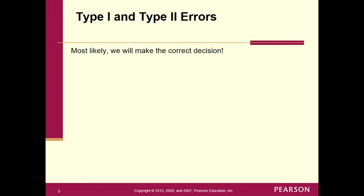Most likely when we do a hypothesis test, we did make the right decision. If we should have rejected the null, we usually end up rejecting it, and vice versa. But every once in a while, because of bad luck — just because of the random sample we got — we come up with the wrong conclusion.